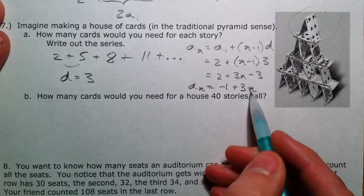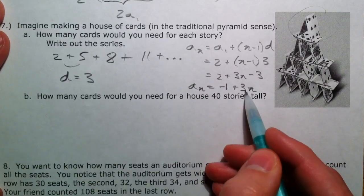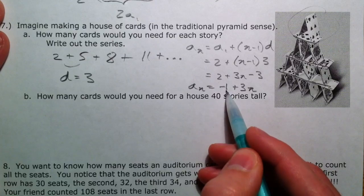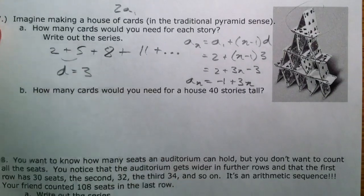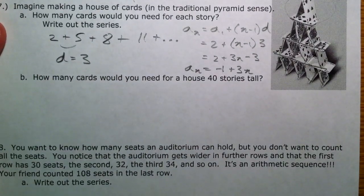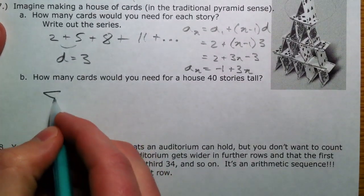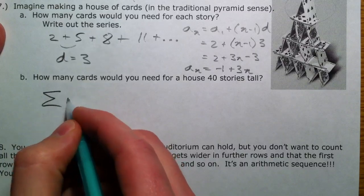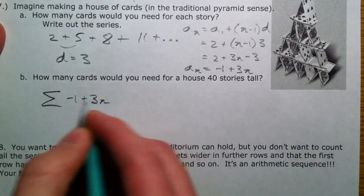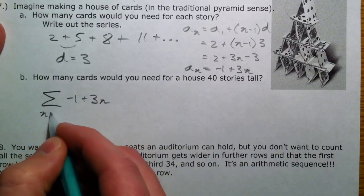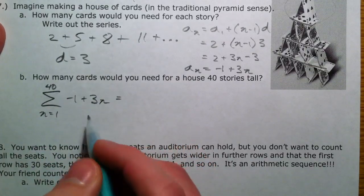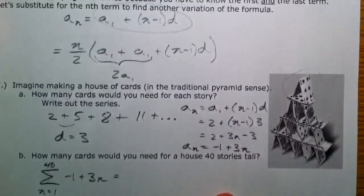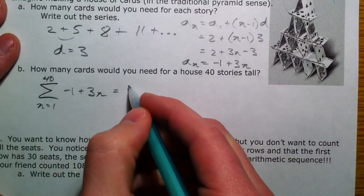So, keep in mind what we've been talking about logically. 3 is like our slope. And negative 1 is like our y-intercept or our zero term if we were to continue the pattern backwards one. So, how many cards would we need for 40 stories tall? That's as if we had negative 1 plus 3n in here. And we're finding it from when n equals 1 to when n equals 40. And so, we use our equation that we talked about.